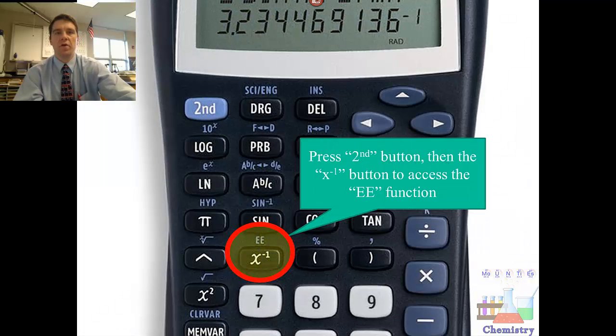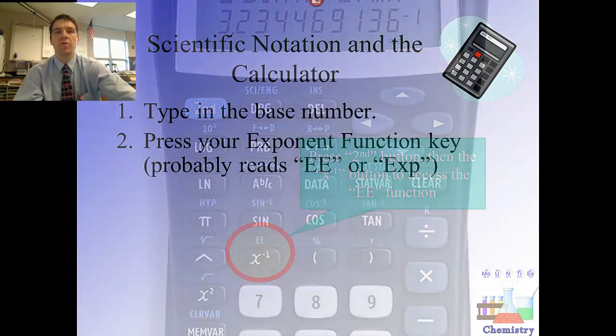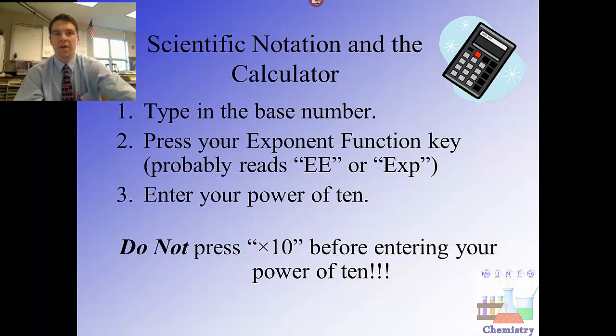If we take a look at the example here, you see that you've got that X to the minus 1 key right above the 7, and in order to enable that exponent function, the EE, you must press the second button first. Now the thing to remember is that when you use this function, after you put in your power of 10, you don't type in times 10. That EE function, that exponent function, replaces that. So you would simply put in the base number, do second EE, and then whatever your power of 10 is.